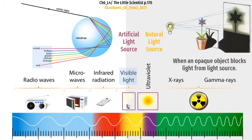Sometimes this white light can be blocked by opaque objects, and this is how shadows happen. When an opaque object blocks the light from a light source, a shadow is formed. And do we only have visible light? No. There are other kinds of light that we cannot see, such as infrared light and ultraviolet light.